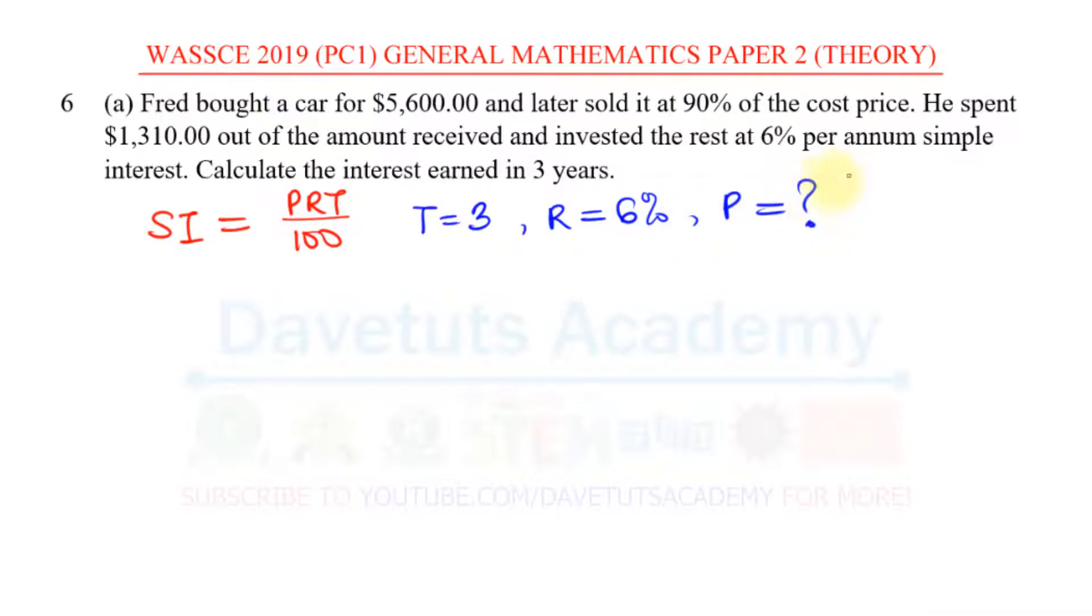The principal is the amount that he originally invested. What is before us is the task of finding out the principal. For us to get the principal, we need to analyze this information that we are giving. We are told that he bought a car for $5,600, so the cost price for the car is equal to $5,600.